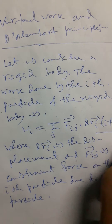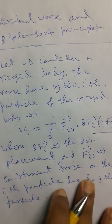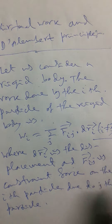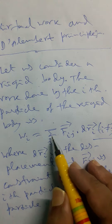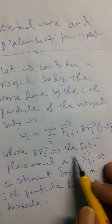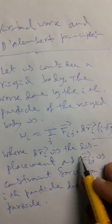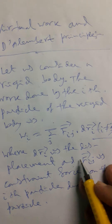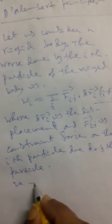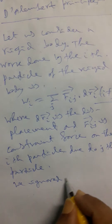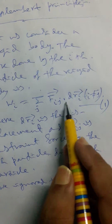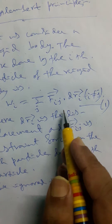Taking this as equation number 1, it is noticeable that we consider a rigid body and the work done by the ith particle is given by W_i equals the summation of this quantity. Here dR_i stands for the displacement and F_ij is the constraint force of the ith particle due to the jth particle. It is noticeable that we ignore the self forces — that means F_ii, which are self forces, will be ignored.